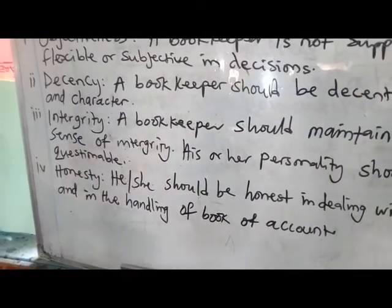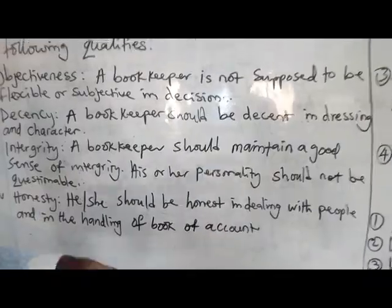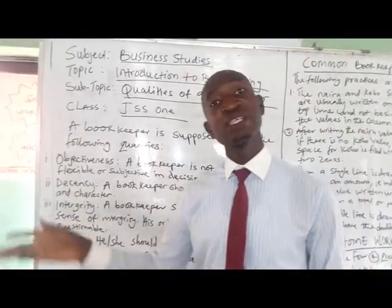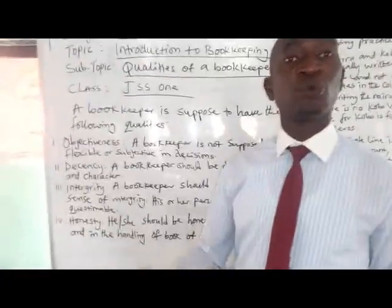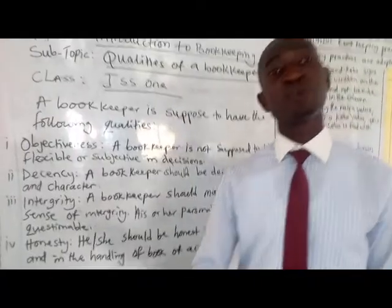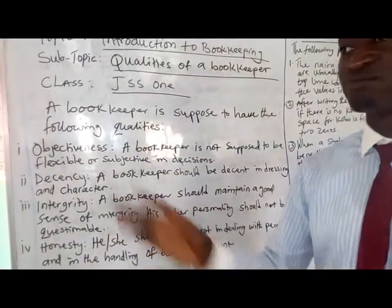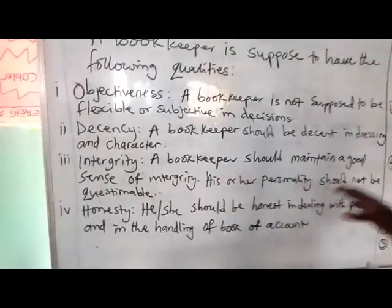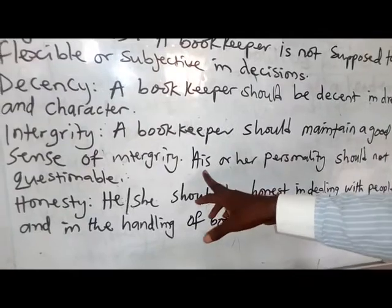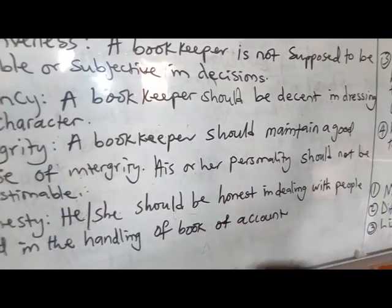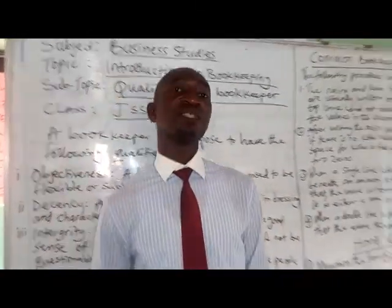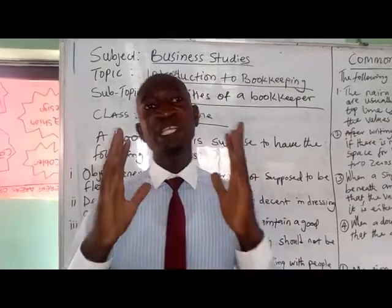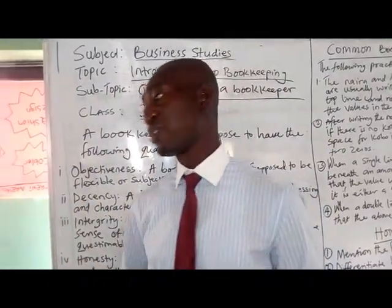Thirdly, integrity. Let me deviate a bit to politics — this is the mantra that brought our president, His Excellency General Mohamed Uwari, to power. What people know him for is integrity. He is a man of his words. So a bookkeeper should maintain a good sense of integrity. His or her personality should not be questionable. You should not be a person of dubious character. You should remain straight, and that straightforwardness should be known of you forever. That is what integrity is all about.